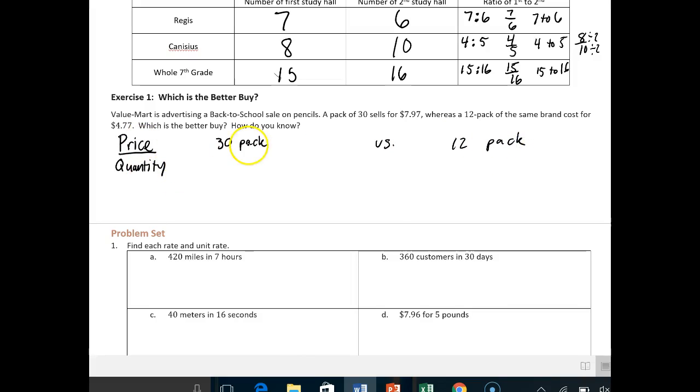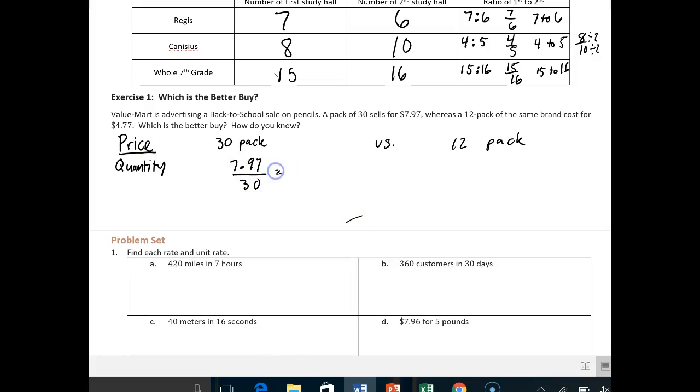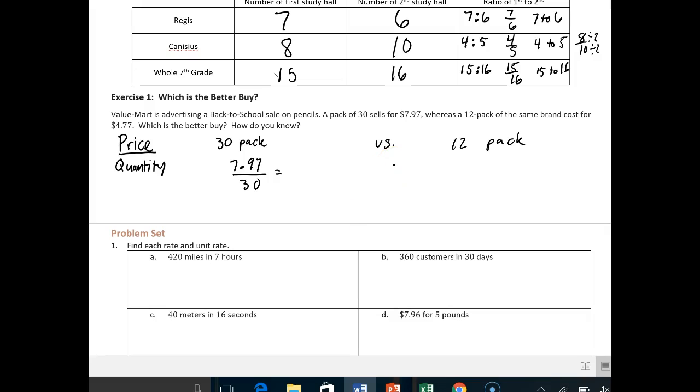So again, we want to put the price over the quantity. So the price of the 30-pack is $7.97 over the quantity, which is 30. And you guys are going to be allowed to use Google's calculator today because we're going to be working with some numbers that are going to give us really crazy decimals. So I'll help you out on this one. It gives you 0.265 and it goes on for a really long time.